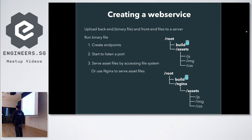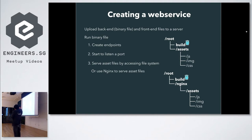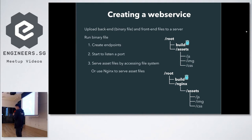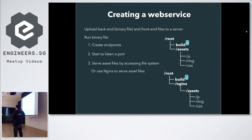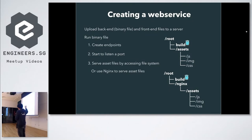Creating a web server in Go is pretty easy. You just create an endpoint, open it up, then Go starts to listen on the port. Whenever there's an incoming request, Go accesses the file system and retrieves HTML, images, and other files, then serves them back to the frontend. Usually the server hosts a built Go binary file. On the same path, you have the slash assets folder, and under that folder you have all the files like JS, images, and CSS. Everything is hosted on the Go server.